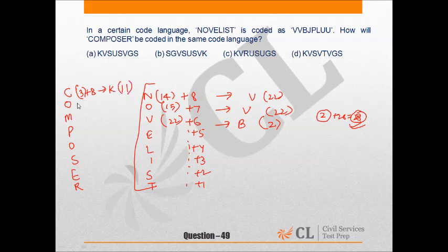And the position of O is 15. 7 will be added to 15, that will give us 22, which is V. The position of M is 13, so 13 plus 6 equals 19. 19 is the position of S.